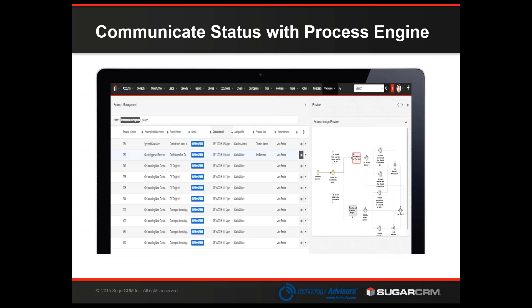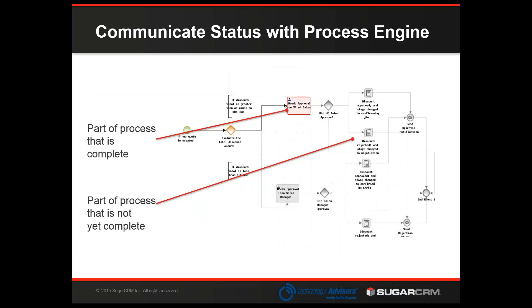Advanced Workflow also has the ability to monitor processes that are being run. This is an administration view where you can see all of the processes that are currently running or even processes that have already completed. You can see where a process is right now, who it's assigned to, who it's waiting on, and what step it's on within the process. And in a slightly bigger screenshot, you can see that same process running against a particular quote. Steps that are color-coded show what's happened; anything grayed out is something that hasn't happened yet, either because it didn't go down that branch or because it just hasn't gotten there. It makes it really easy to see what's going on and where that particular instance of that process is.